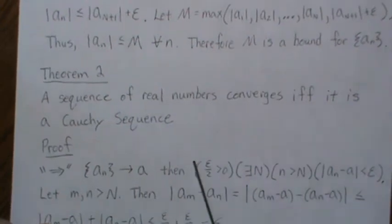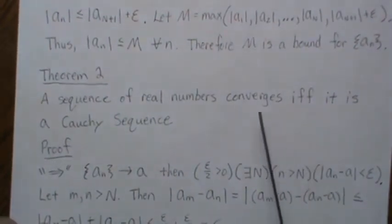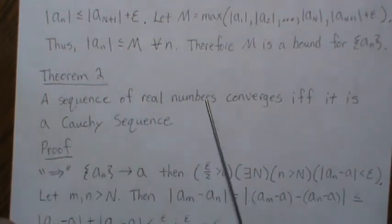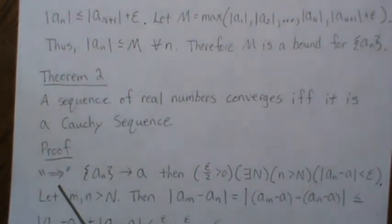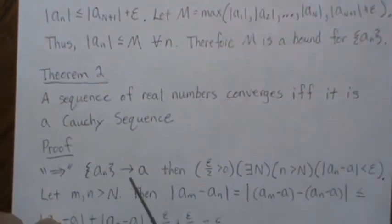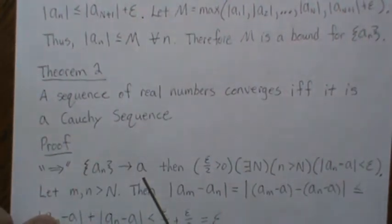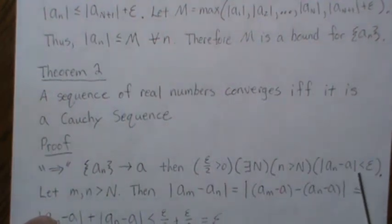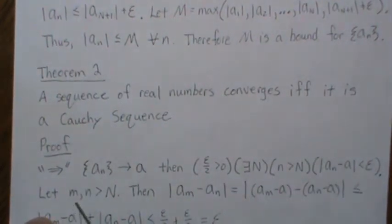So let's prove this, and since it's an if and only if, we assume this is true and prove this, and then we assume this is true and prove that. So going this direction, let's let A_n be a convergent sequence to say A. Then there exists an epsilon over 2 such that there exists an capital N, where little n greater than capital N, we have this inequality hold. Now let's let M and N be greater than capital N.